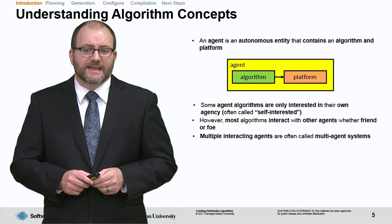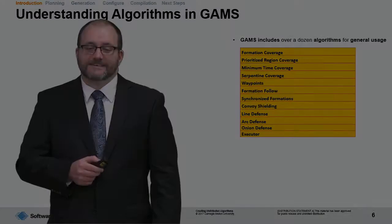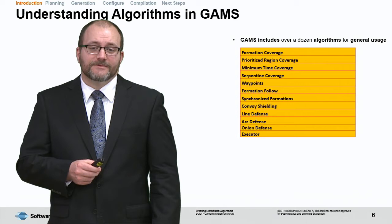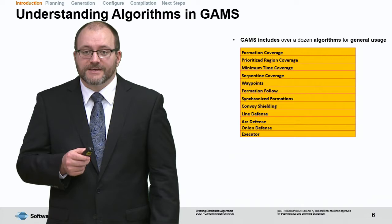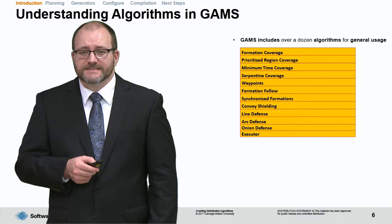When discussing multi-agent systems, most researchers assume the interaction is collaborative toward a common goal. GAMS includes over a dozen algorithms for general-purpose usage. These include coverage algorithms for applications like search and rescue, waypoints and executor functions, and some adversarial algorithms. The collection has both self-interested agent algorithms and multi-agent algorithms.